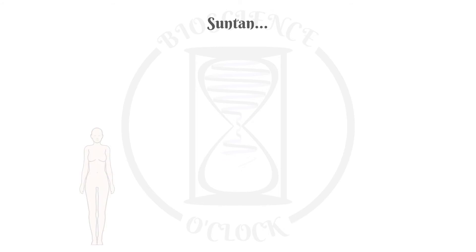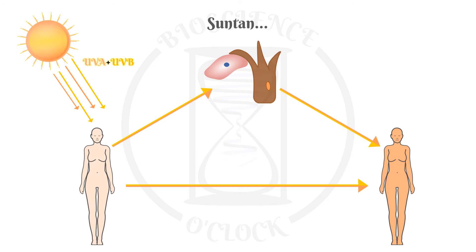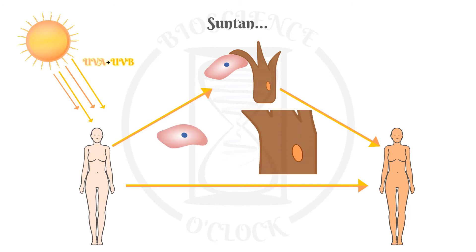What happens when we get tan? First, immediate pigment darkening and then persistent pigment darkening occurs. The first is of a grayish color and occurs in the first minutes after exposure. The second is a brownish color and occurs hours after exposure. Both depend on UVA rays and are the result of pre-existent melanin photo-oxidation. After pigment darkening comes delayed tanning: UV rays stimulate the production of the alpha melanocyte stimulating hormone in the keratinocytes, which binds to its receptor on the melanocytes — the melanocortin receptor 1, MC1R. This will in turn start the synthesis of new eumelanin as a means to protect the cells from harmful UV rays. However, this protection is very limited.